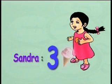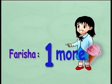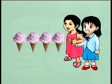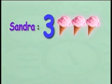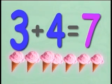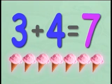Sandra bought three ice-creams. Farisha bought one ice-cream more than Sandra. How many ice-creams did they buy altogether? Sandra had three ice-creams and Farisha had one more. This means that Farisha had four ice-creams. So altogether, they had three plus four equals seven. They had seven ice-creams altogether.